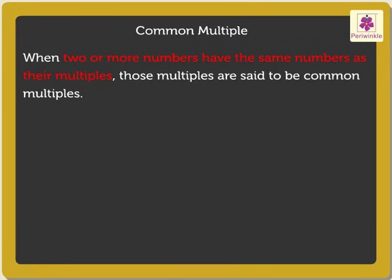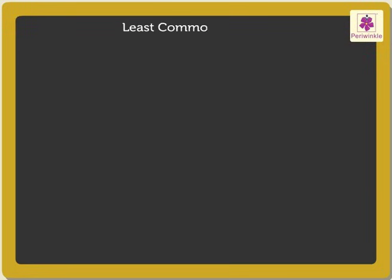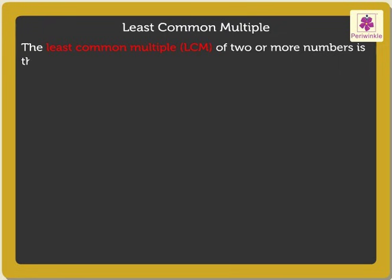Now, let us see what do we mean by the least common multiple. The least common multiple of two or more numbers is the smallest number that is a multiple of those numbers.